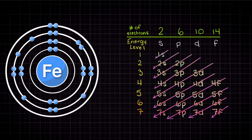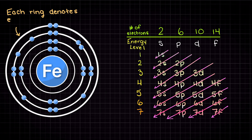Let's also remember that in the past video, we talked about this handy device for remembering which orbitals have the lowest energy, as those are going to be the orbitals that get filled first. Since we have 26 electrons to place, let's use this Bohr model of iron to help us keep track. Each of these rings around our iron center denotes an energy level, and each row is associated with a ring on our Bohr model.